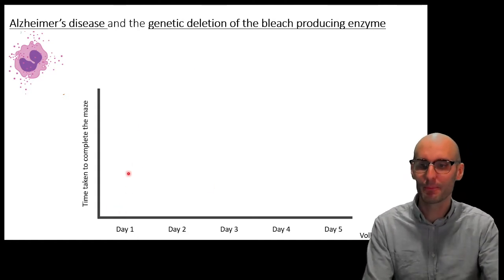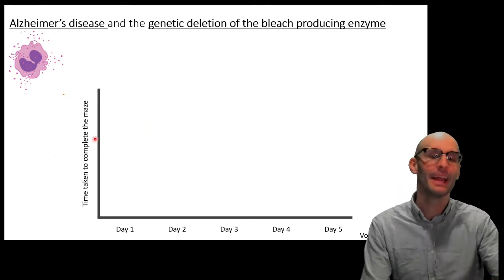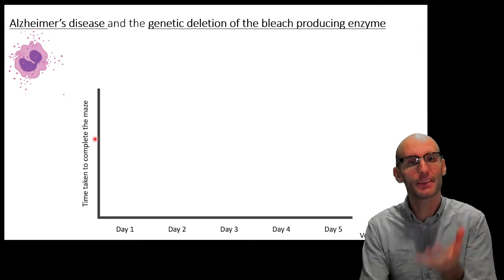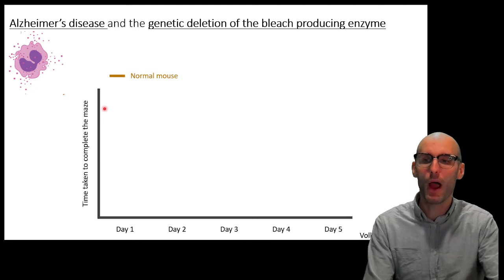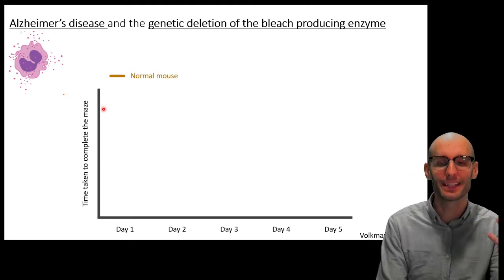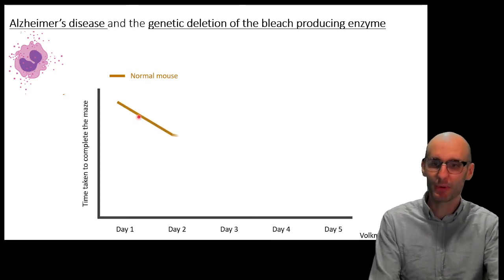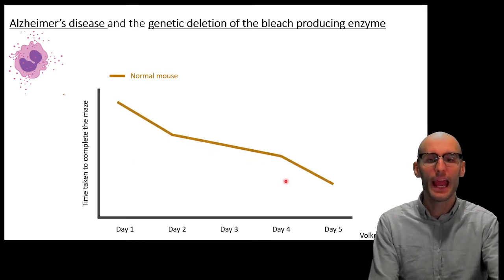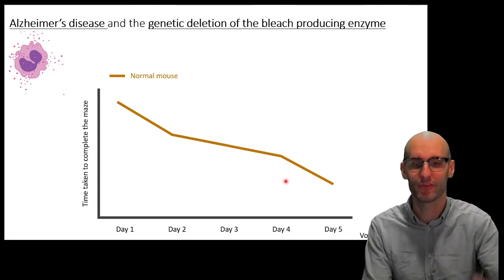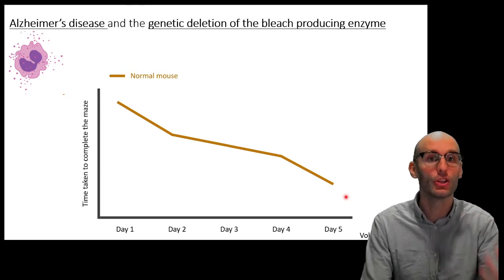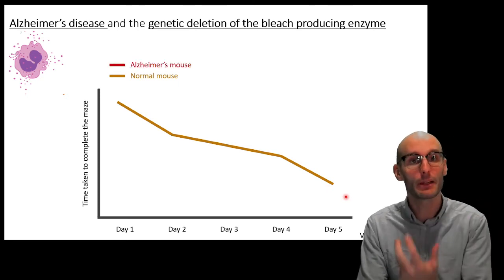They put the mice through a maze task called the Morris Water Maze. Looking at a normal mouse: on the y-axis is the time taken to complete the maze, and on the x-axis are days of training. A normal mouse learns the maze and gets faster and faster each time. An Alzheimer's mouse has very poor memory — one of the main symptoms — so they never get better at the maze because each time they enter it is like the first time. They cannot remember how to complete the maze.